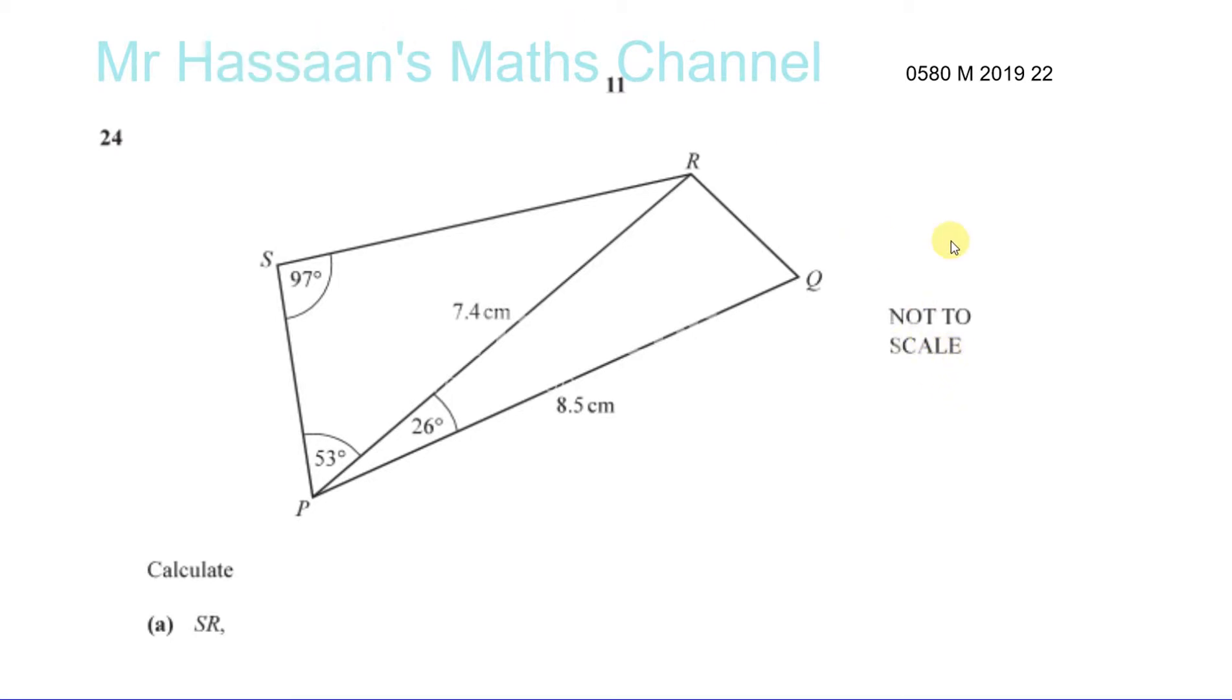You have a quadrilateral shape which is split into two triangles. We've got to find the length SR, so I'm going to call that length X. Now we have this triangle which is SRP.